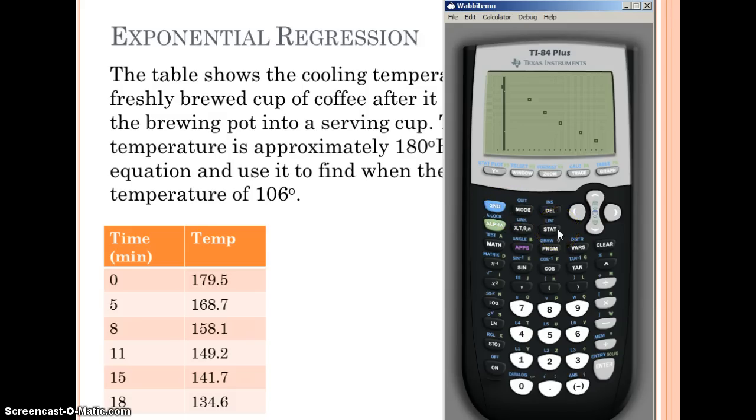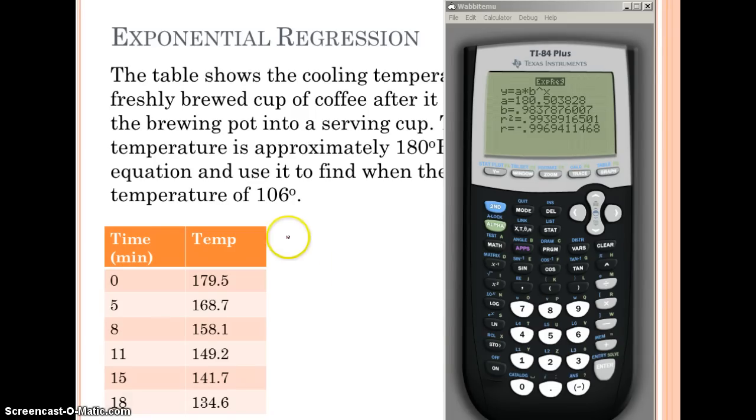We want to find the equation. We know this is exponential, so we're going to go stat calc and keep going all the way down to zero for exponential reg. Press enter, calculate, give it a second. It tells us our form is y equals a times b to the x, which is our general exponential form. We have our a and our b. To write our equation, we can round and say y equals 180.5 times 0.98 to the x. Our problem wants to know when the temperature of the cup is 106 degrees. This one's a little different. Instead of plugging in for x, we're going to be plugging in for y. So we want to know when 106 equals 180.5 times 0.98 to the x.